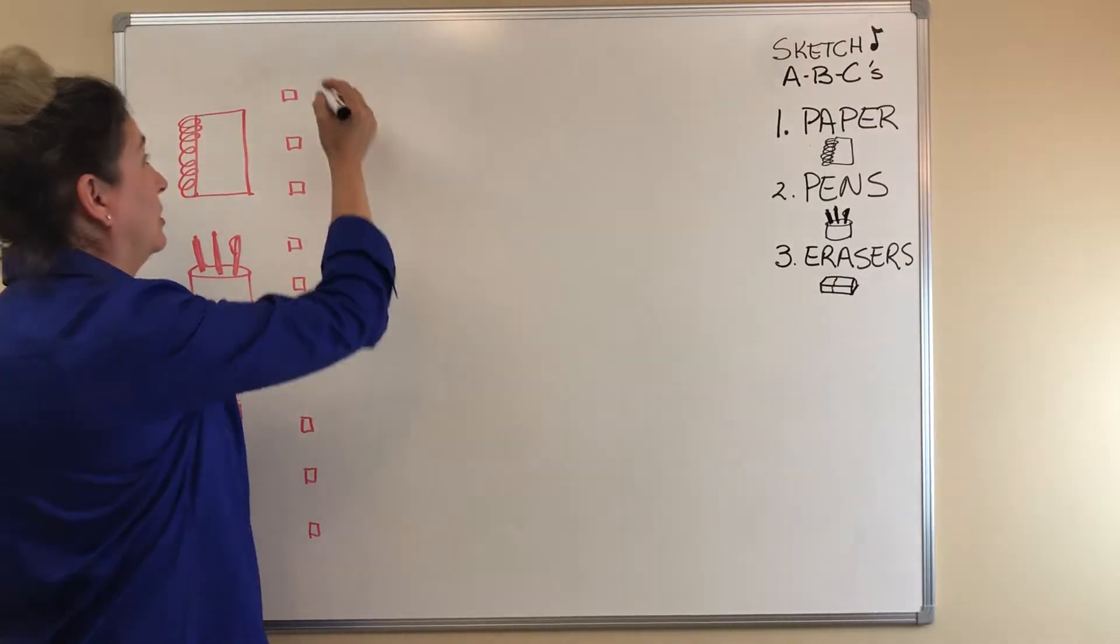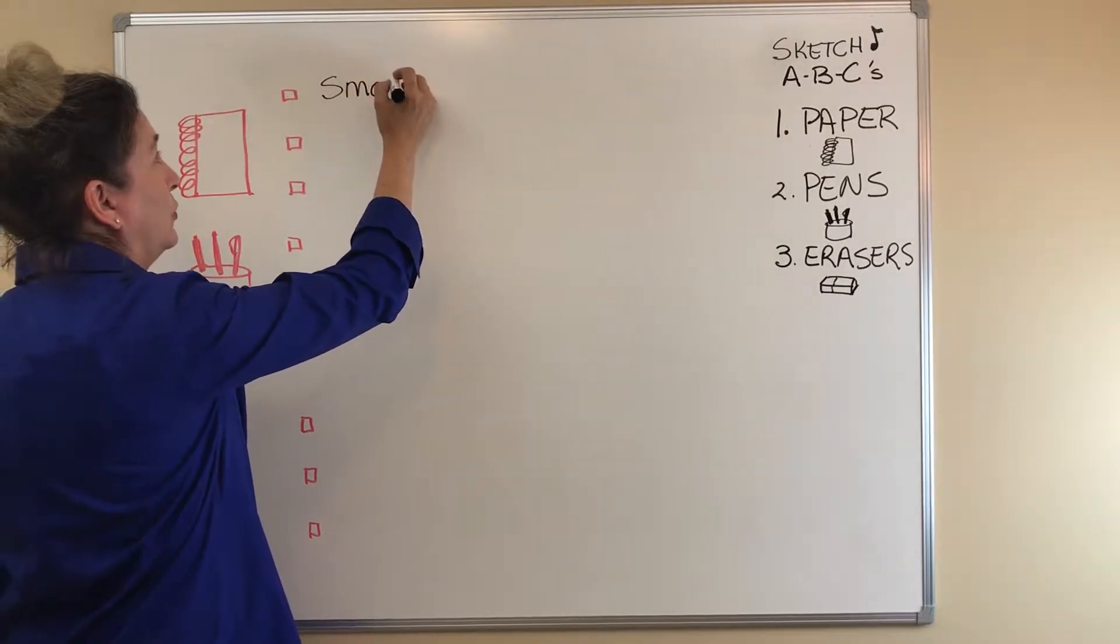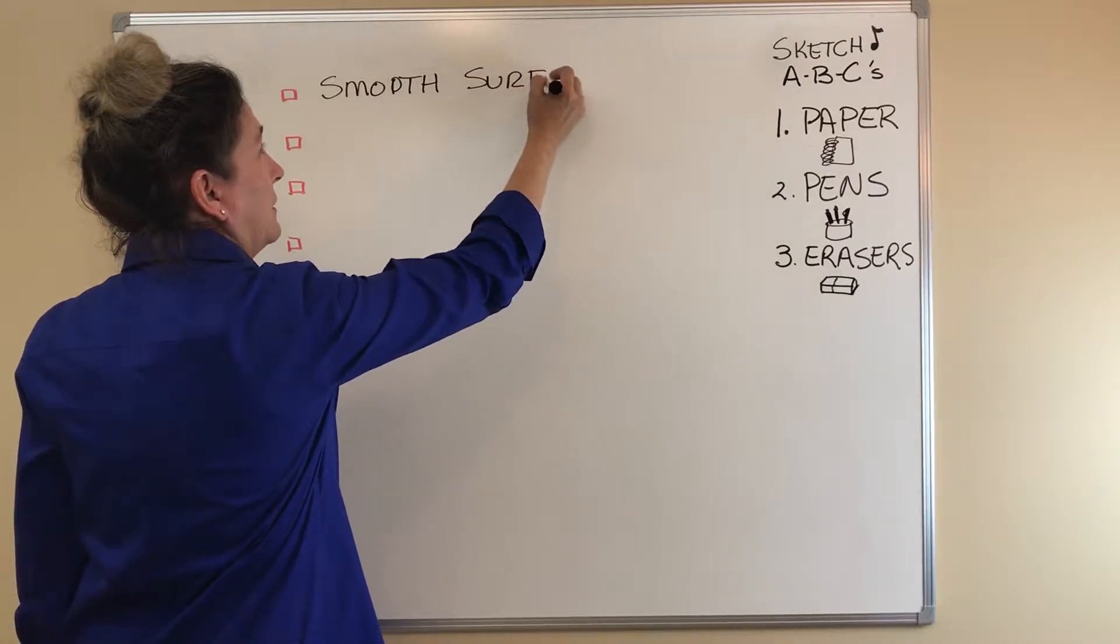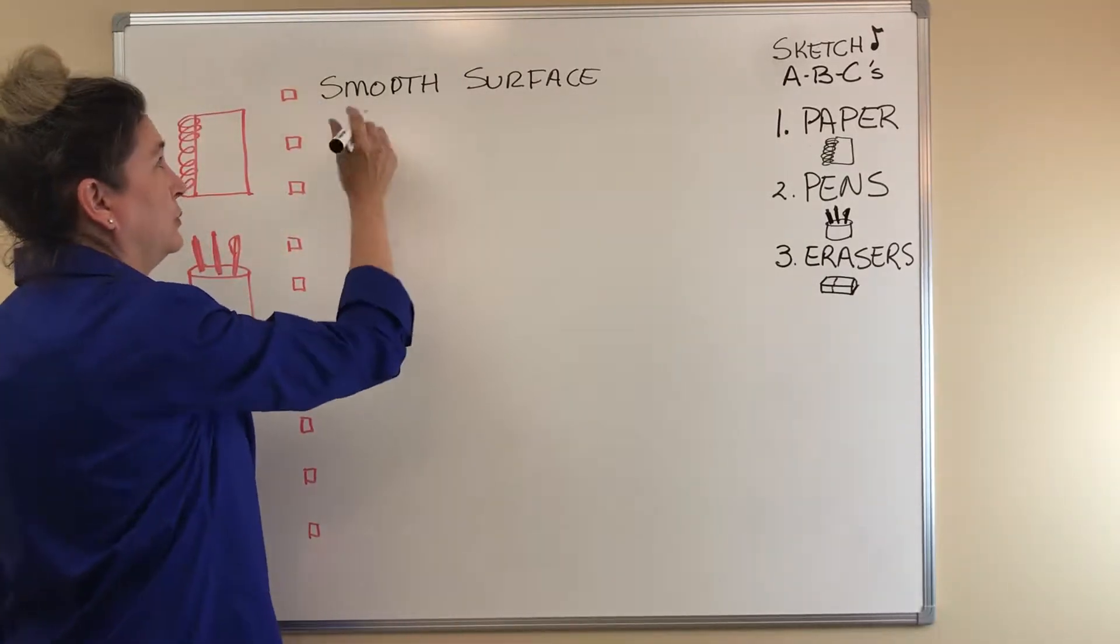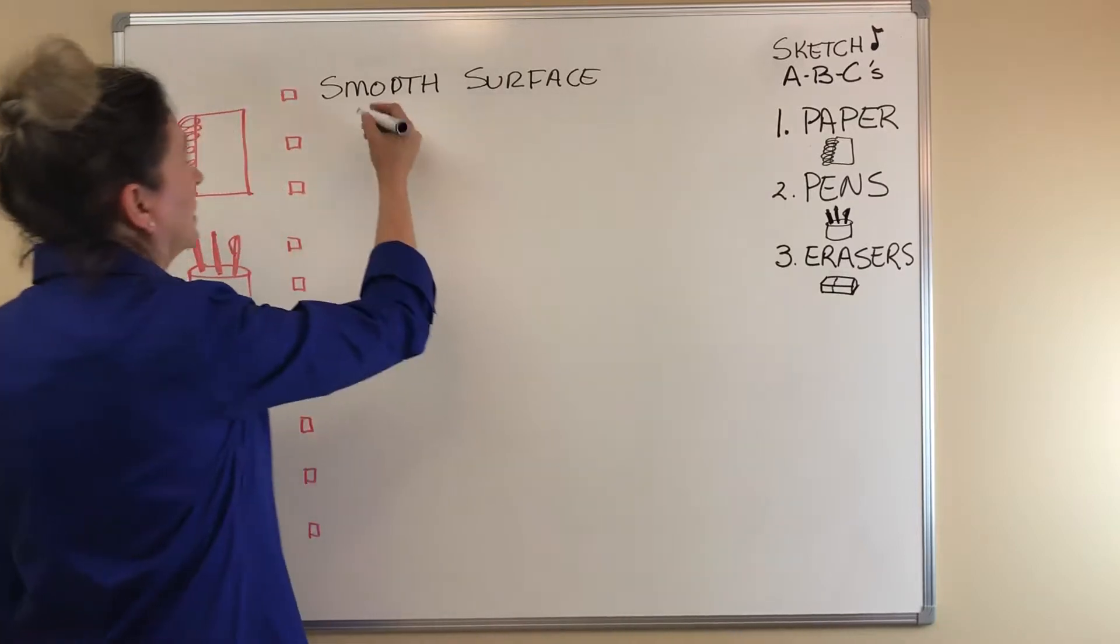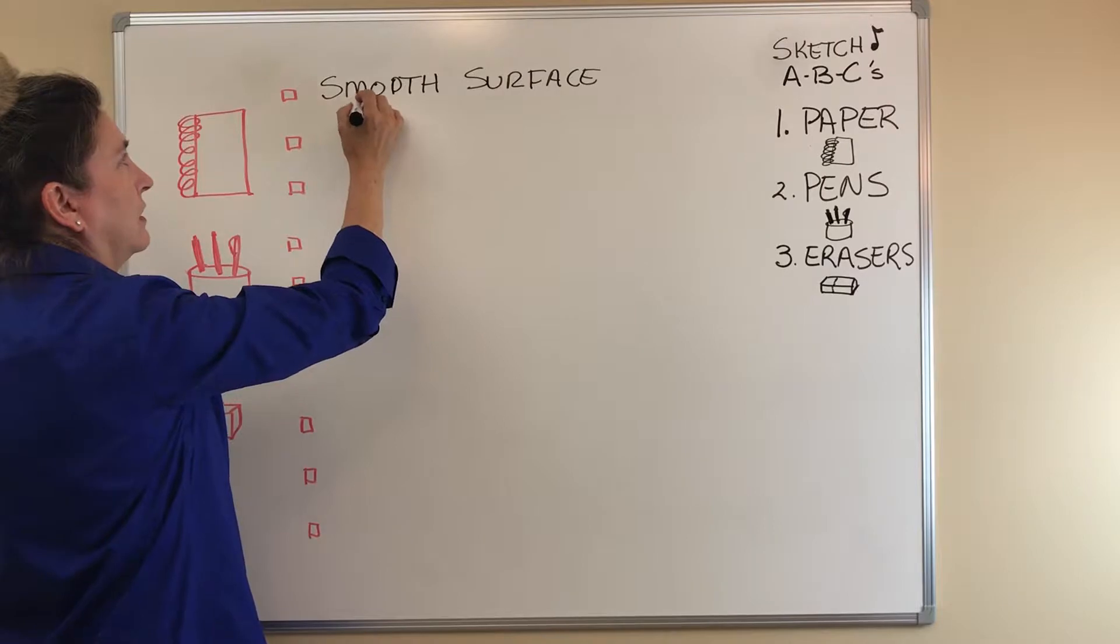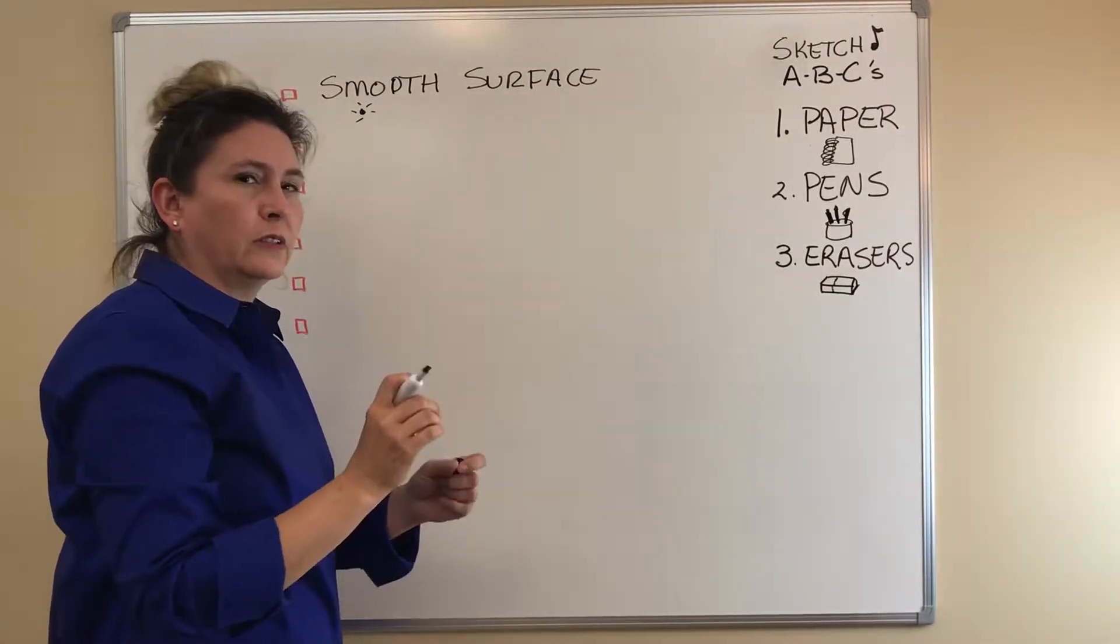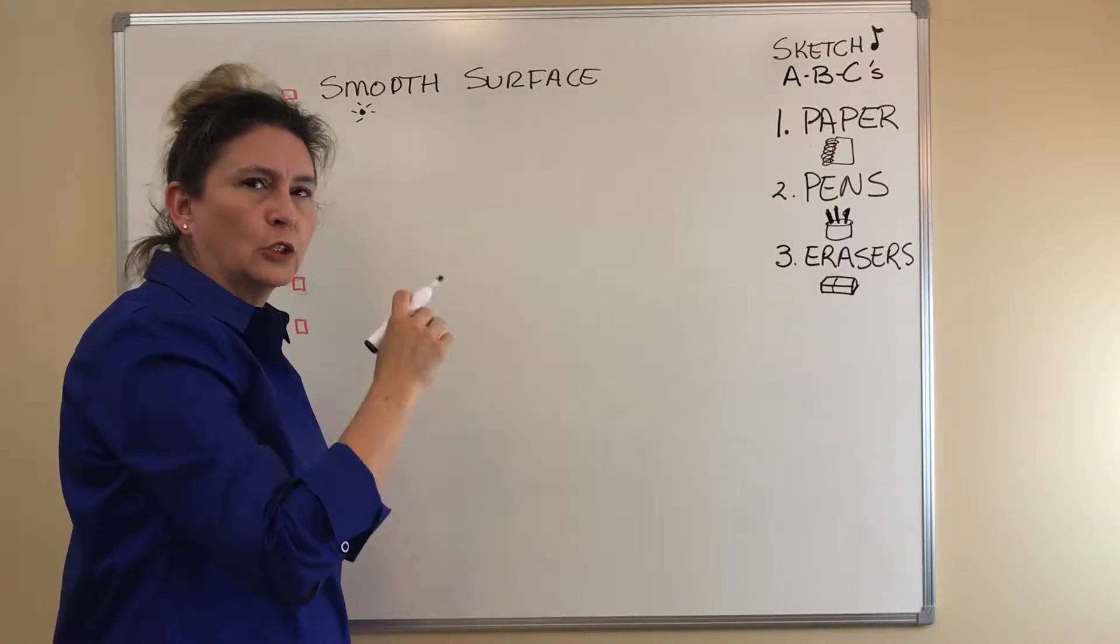So when you're going out looking for paper, look for a very smooth surface because the surface of the paper will give away how porous it is. What you're looking for is when you put a dot of ink on the page, how far does it spread? That's called dot gain.